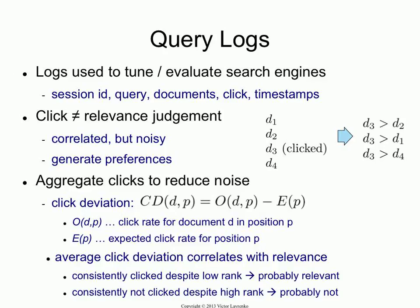For converting clicks to relevance judgments, we talked about click deviation. You take the rate at which a document is clicked on at rank P for a given query, versus the average click rate for position P for that query. The deviation between those correlates with how relevant the document is to the query. That's how you convert clicks into something that looks a bit like relevance.